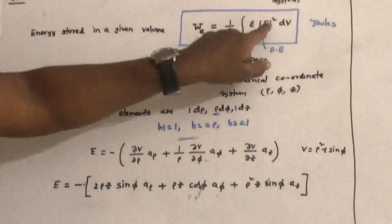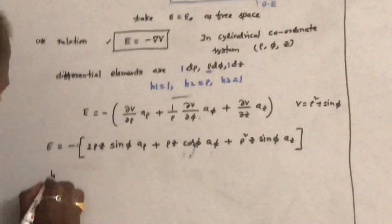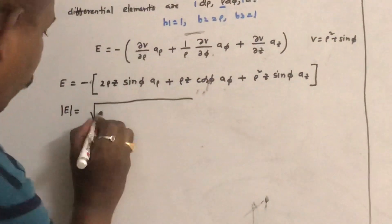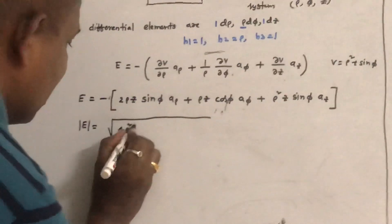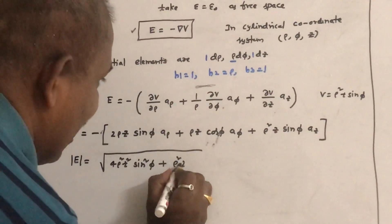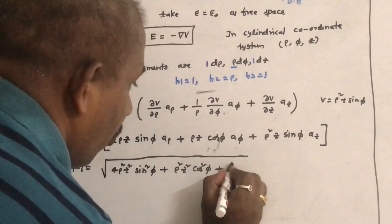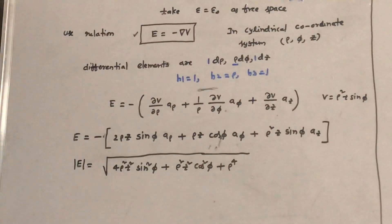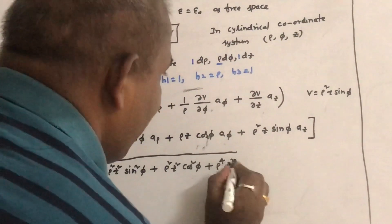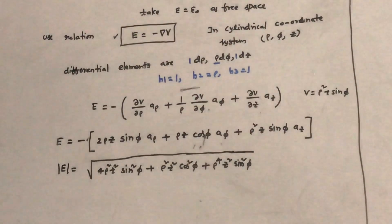Since we want the magnitude of E squared in this formula, the magnitude squared is: 4ρ² z² sin²φ plus ρ² z² cos²φ plus ρ⁴ z² sin²φ. This is the magnitude squared.